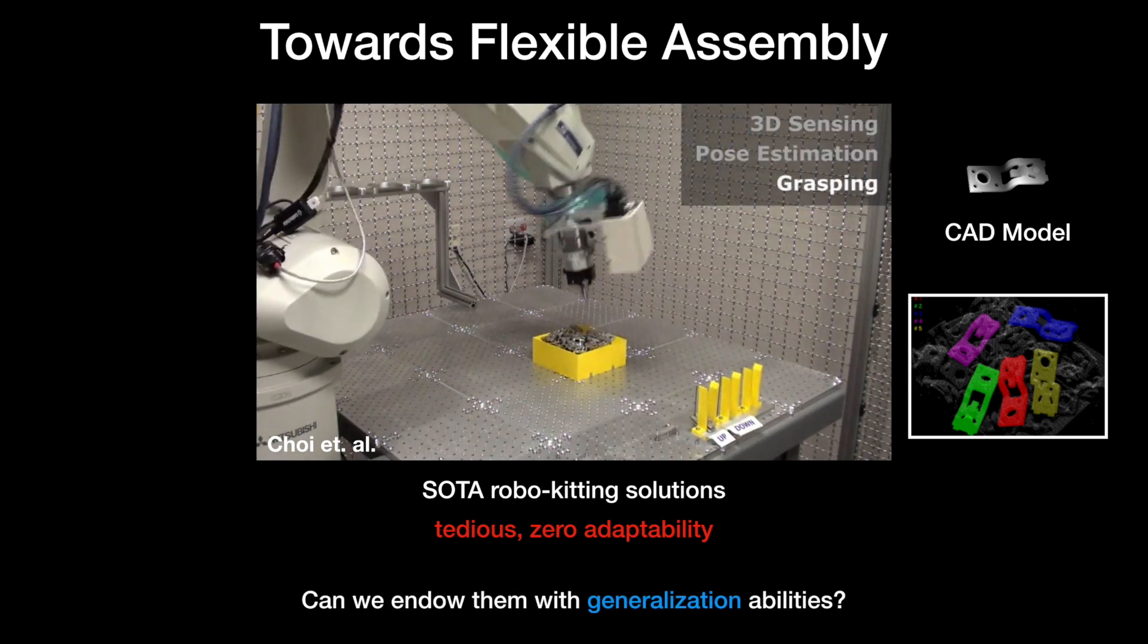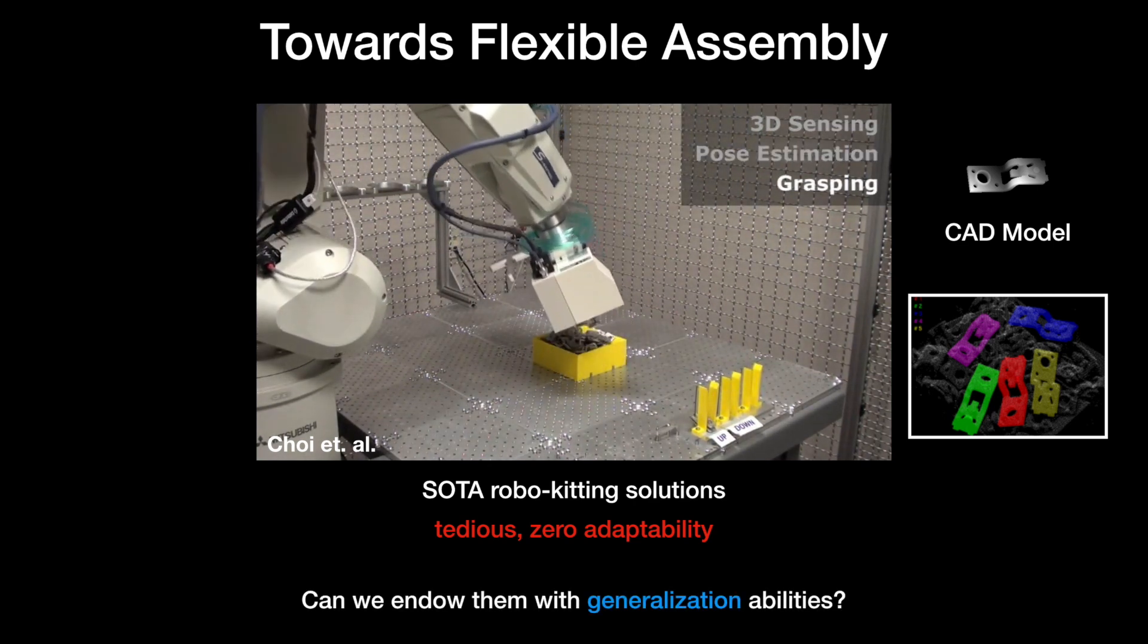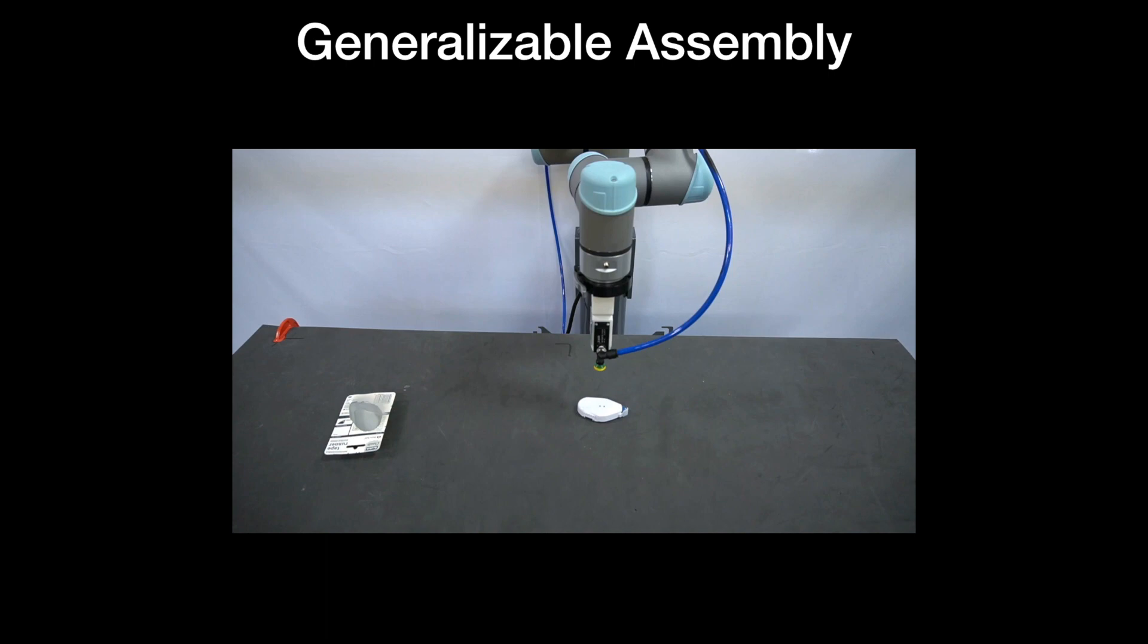Can we develop assembly algorithms that can immediately generalize to new objects? In this work, we show that it's possible to learn generalizable assembly algorithms by framing the problem as one of shape matching.